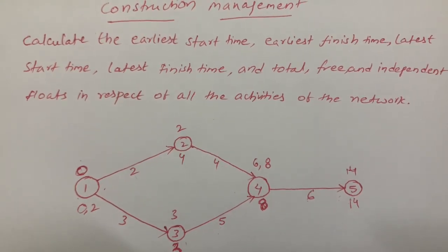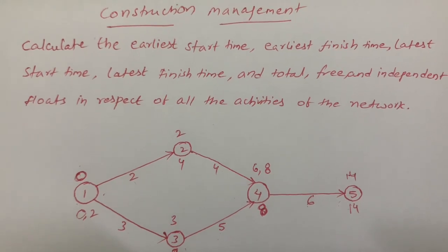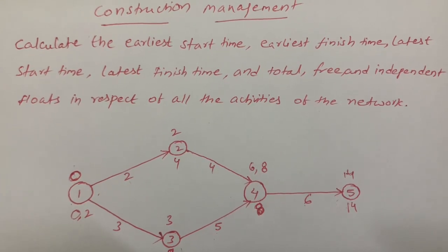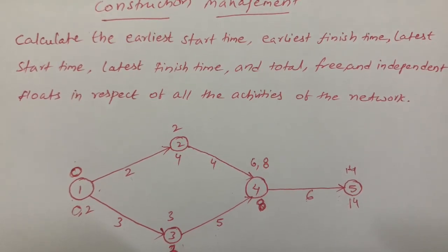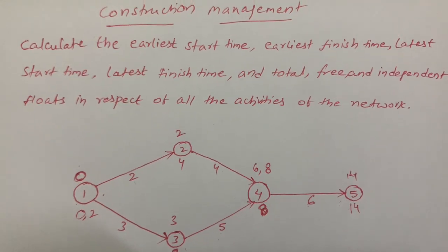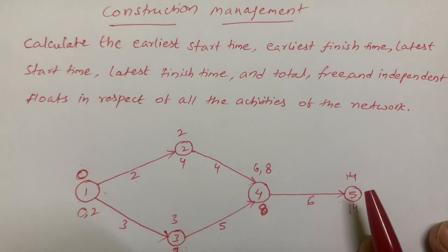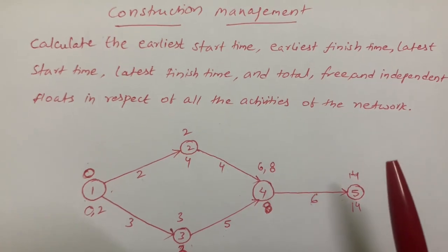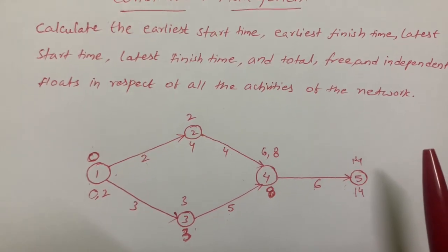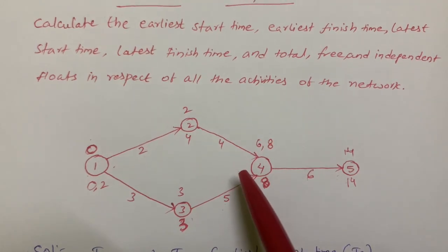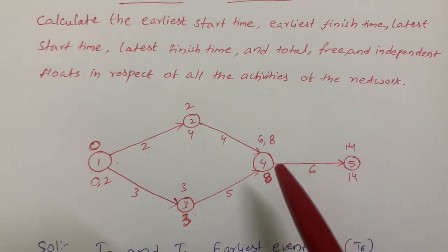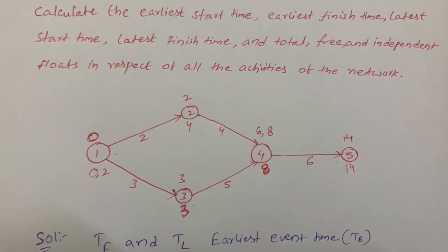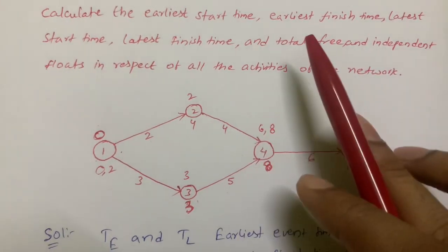Hello everyone. In this video I'm going to explain how to calculate earliest start time, earliest finish time, latest start time, latest finish time, and total, free, and independent floats for all activities of the network. This is useful for civil engineering students writing final semester exams; it belongs to the construction management subject. In the network diagram, the circles are called events and the arrow marks are called activities.